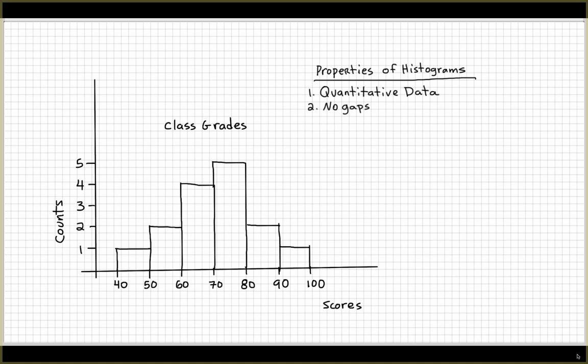The next thing, one of the properties of histogram, is that it doesn't have any gaps between the bars. If you see gaps, if you see several gaps in this particular graph, then you will most likely be looking at a bar graph.